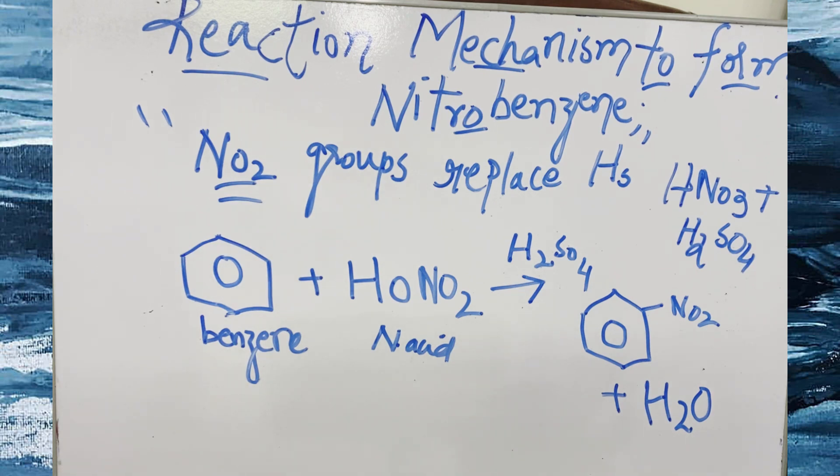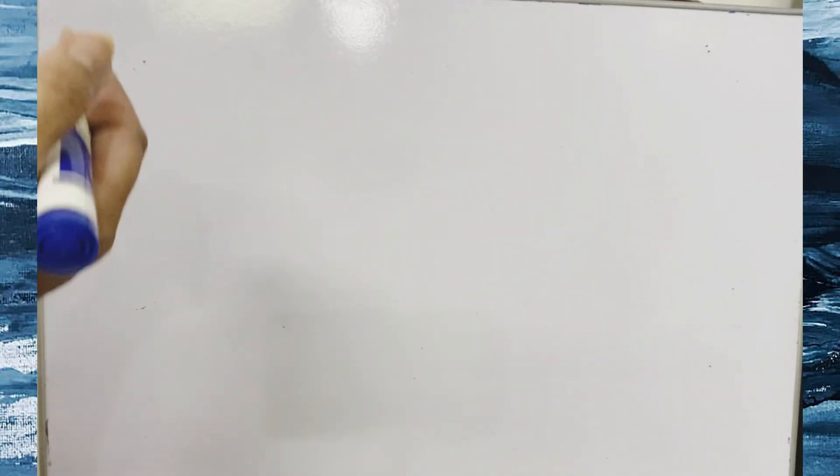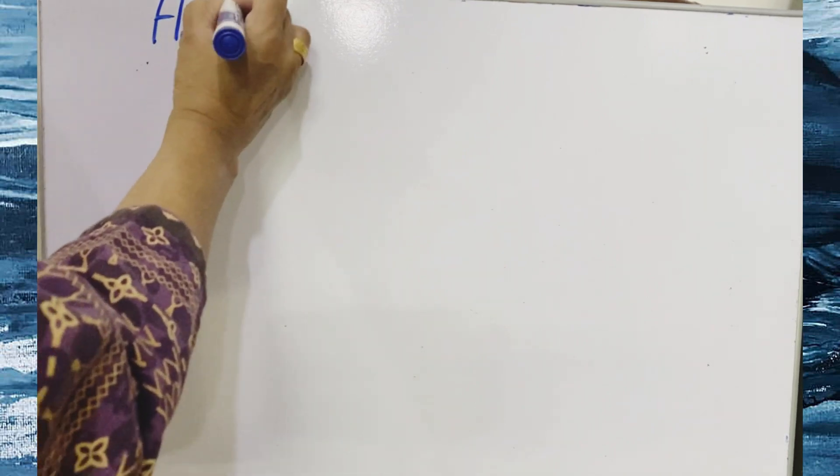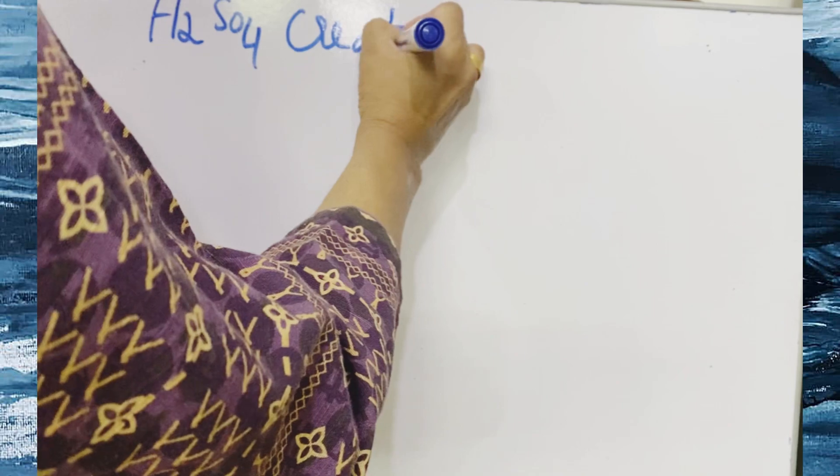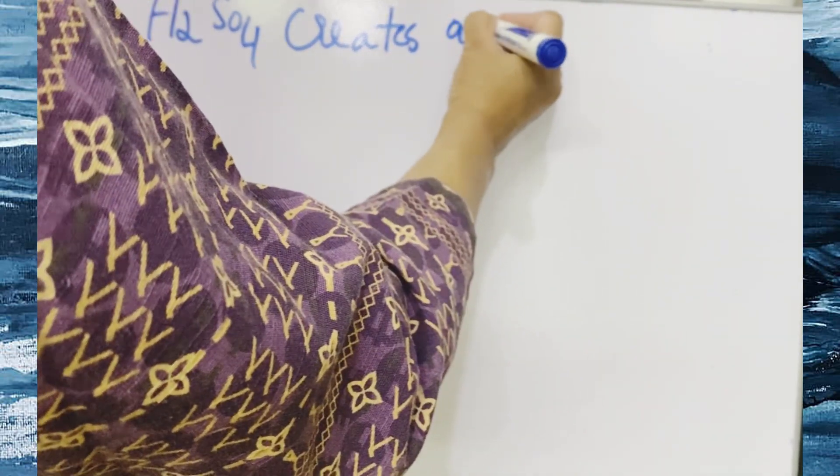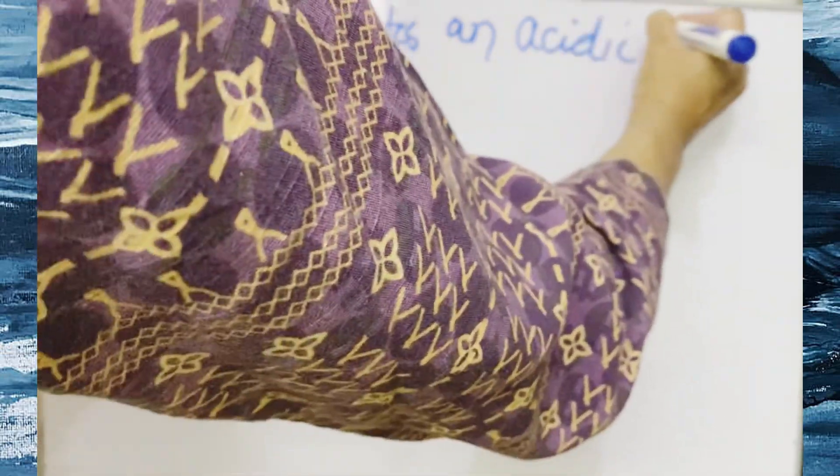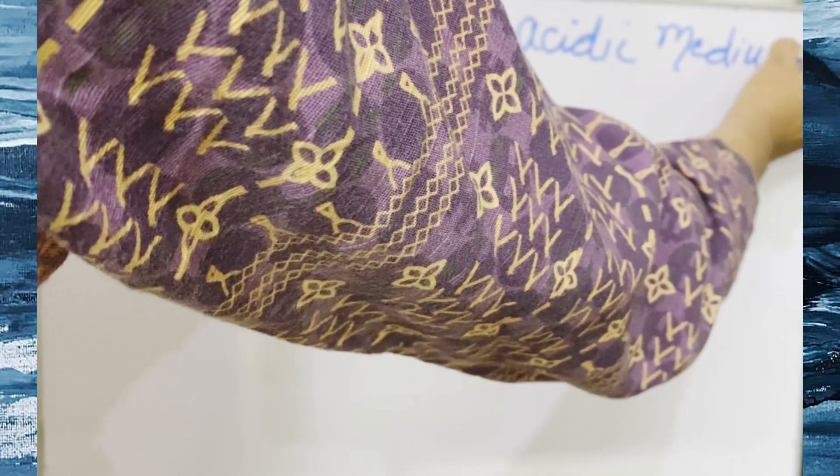So I will explain you more now. Let me rub the board. Now, as we have added a nitrating mixture of sulfuric acid and nitric acid, there is some function of this sulfuric acid. What does it basically do? So it creates an acidic medium, a strong acidic medium in the reaction mixture.